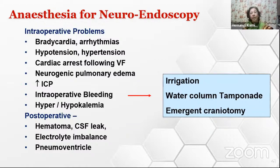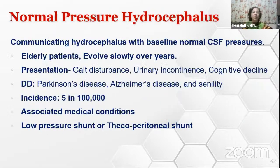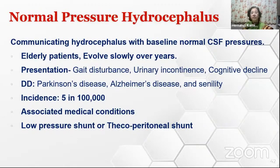Postoperatively there can be hematoma because the dura is not really closed, CSF leak, and pneumoventricle—a very common finding after neuroendoscopy. Hydrocephalus does not occur only in babies or from congenital causes—one such condition is normal pressure hydrocephalus in elderly patients, occurring because absorption becomes poor more slowly over the years.